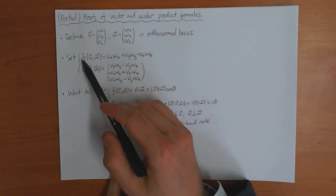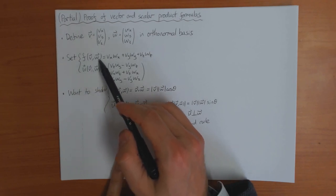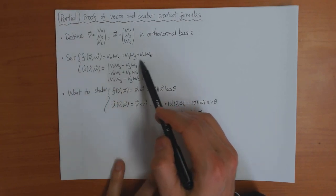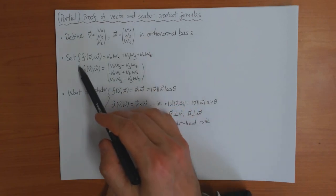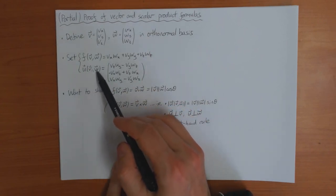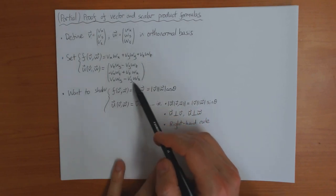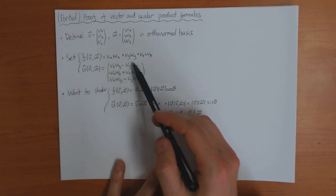And suppose I define some function f of v and w like this, which is how I told you the scalar product is. And I define a vector function u of v and w like this, which is what I told you the vector product is.